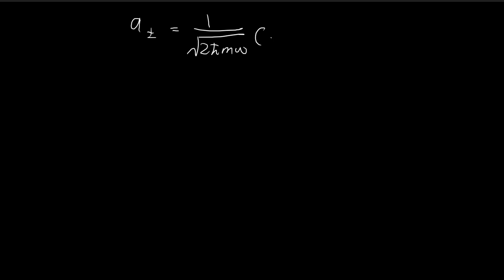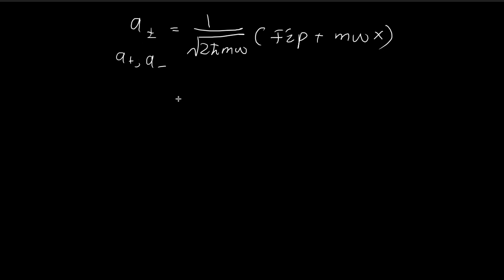The next thing we're going to do is define this A operator. This is not something we derive — this is something we define, and we define it because it's going to come in very handy later on. By doing this, we've defined two operators: A plus and A minus. When the sign is plus, the other becomes minus, and vice versa. We're going to explore some of the properties of this operator.